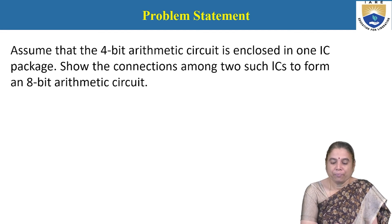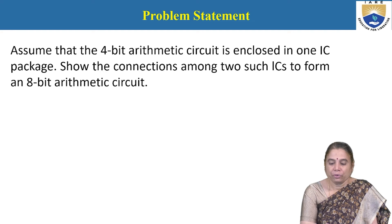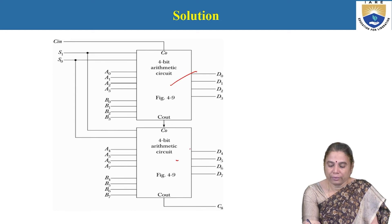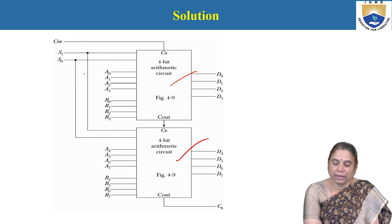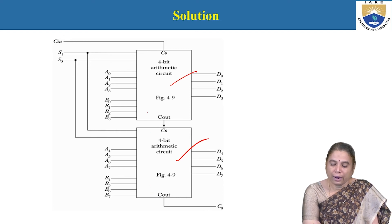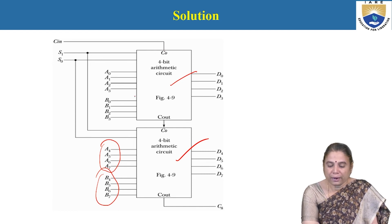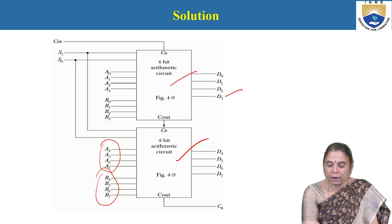The next problem: assume a 4-bit arithmetic circuit is enclosed in one IC package — show the connections among two such ICs to perform an 8-bit arithmetic circuit. Here two 4-bit arithmetic circuit ICs are used with two selection lines. Each IC receives 4 bits from register A and 4 bits from register B. The carry-out from the first IC connects to the carry-in of the second. The output is moved to register D using the two IC packages.